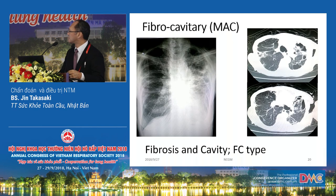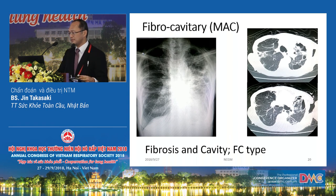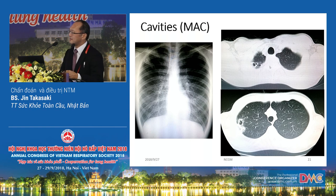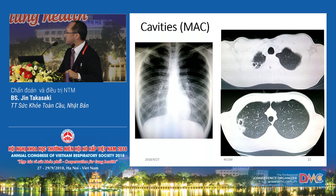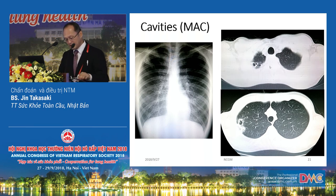This is a cavitary MAC. We can see the cavity and bronchiectasis leading to the cavity. This is an upper lobe exception: a 26-year-old male with cavity lesions in the upper lung lobes. We first suspected mycobacterium kansasii infection or TB. However, bronchoscopy revealed MAC. That patient was treated by surgical resection.